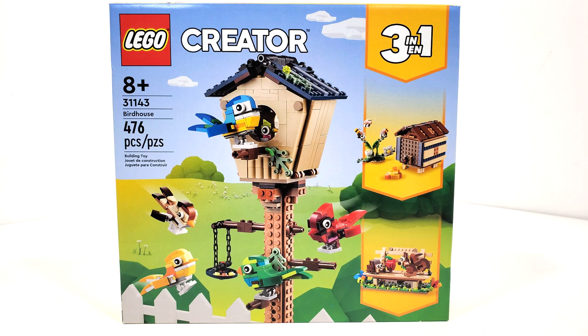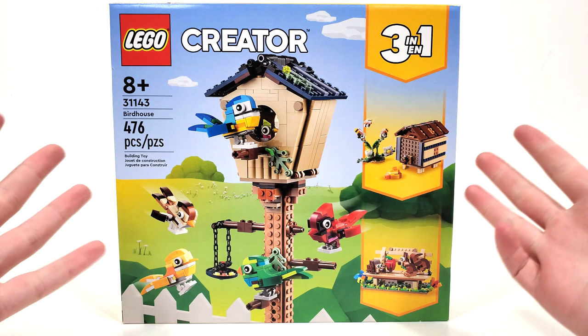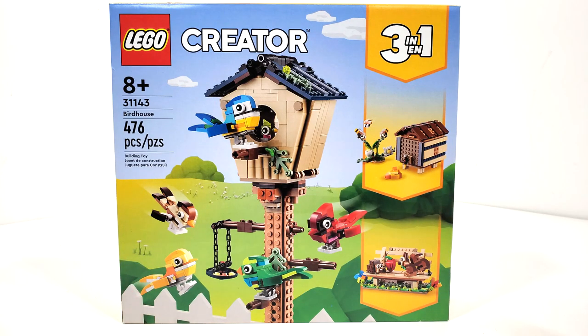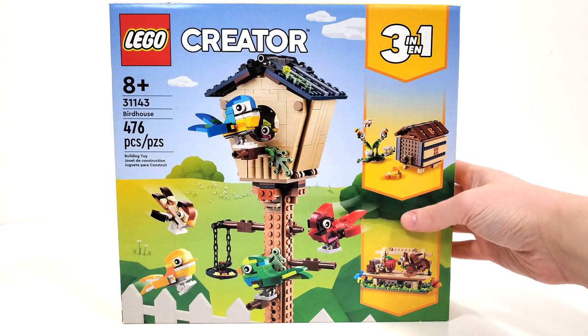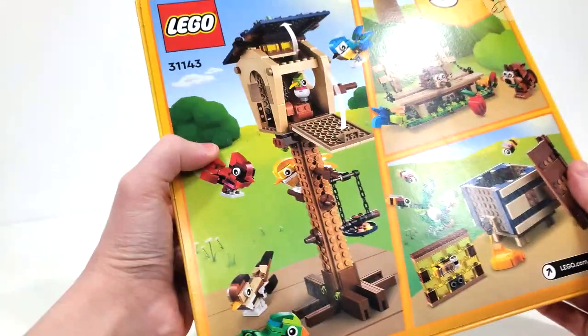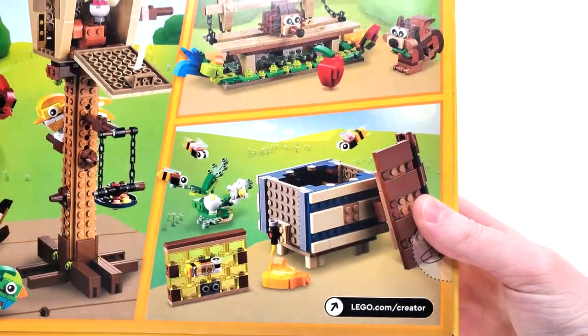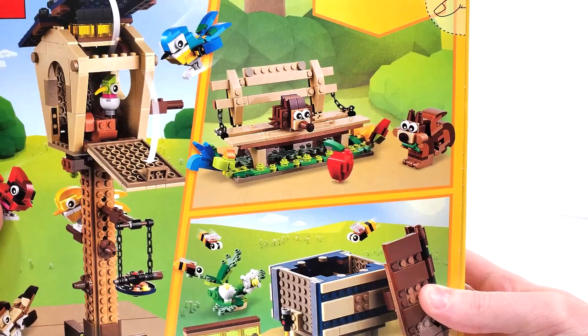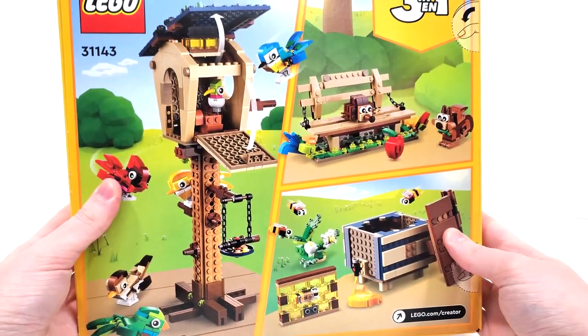At this time I should have reviews up for both of the Creator January releases. I've had quite the fixation with this theme lately. I'm really excited to get some of the March sets. Getting into the box art design, we continue with that polygon animated style for the background. You get a look at the main build in addition to the two alternate builds: the Birdhouse, the Beehive, and the Park Bench, which I think are all very strong builds.